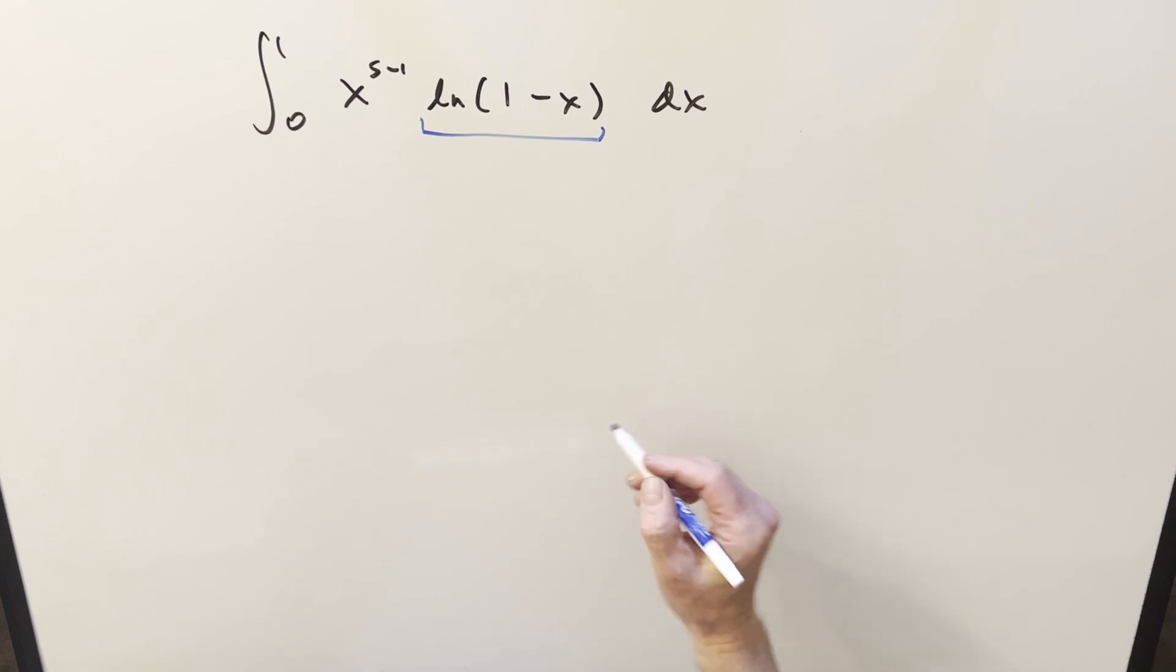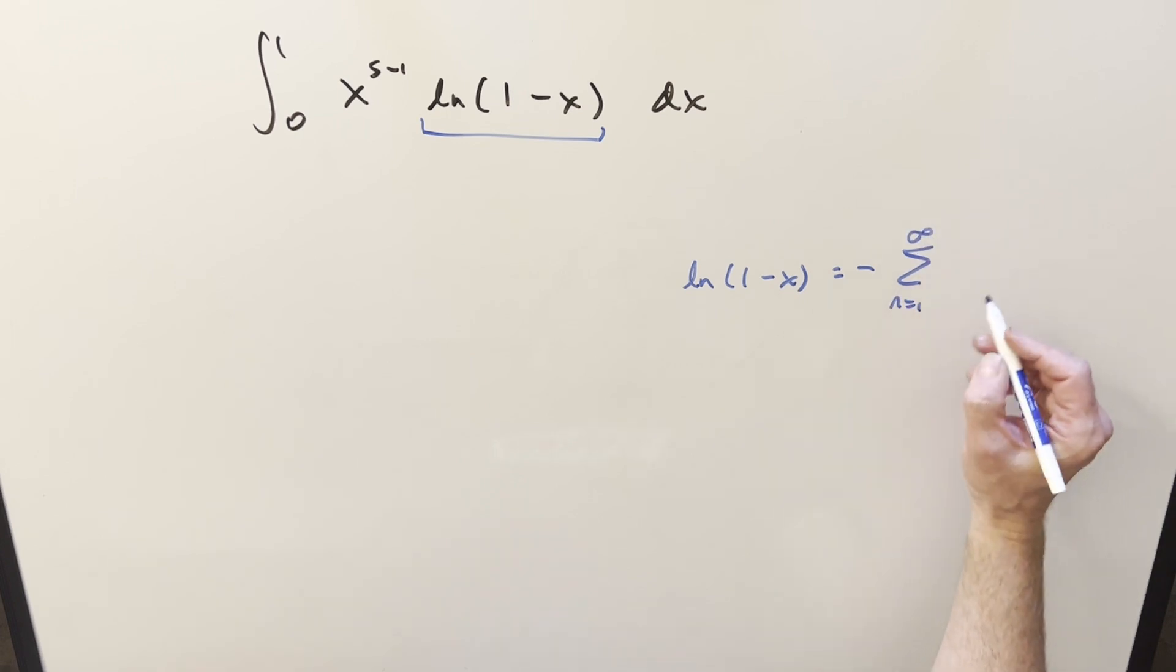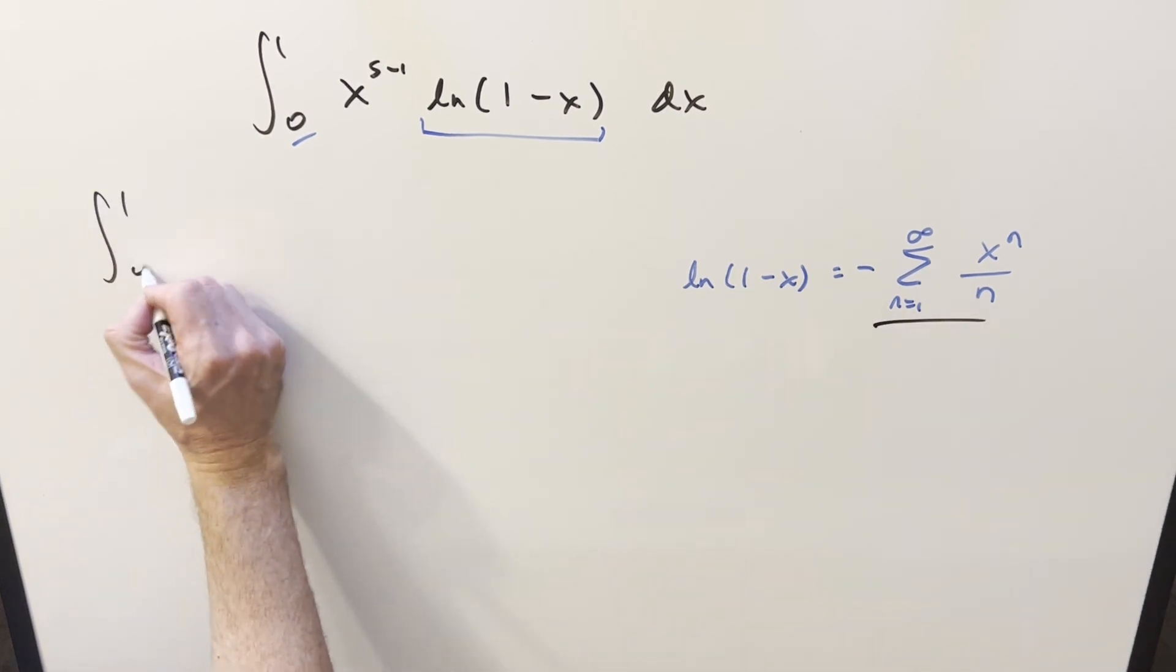what I want to do is use the power series expansion for natural log 1 minus x. This is going to be the same thing as minus the sum from 1 to infinity of just x to the n over n. The convergence on this is the same as geometric series between 0 and 1, but we've got no problem as our bounds are between 0 and 1.